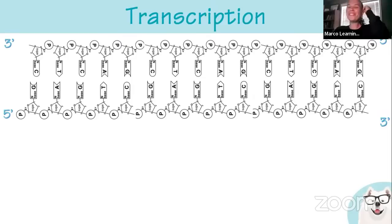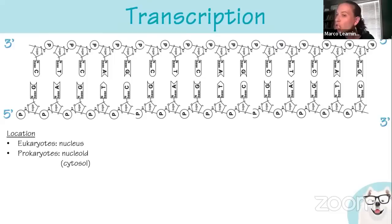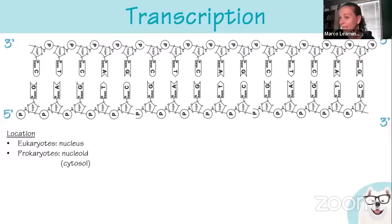Transcription is where RNA is made from the DNA strand. In eukaryotes this takes place in the nucleus; in prokaryotes in the nucleoid, which is within the cytosol. Since there's nothing separating RNA from the ribosome in prokaryotes, you can start translation as soon as transcription is complete. RNA is made up of adenine, uracil, cytosine, and guanine.